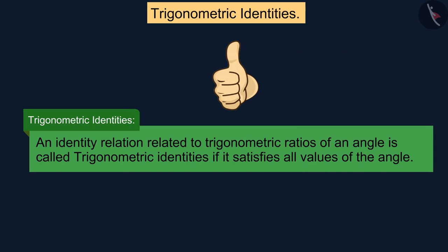Well done! An identity relation related to trigonometric ratios of an angle is called trigonometric identity if it satisfies all values of the angle.